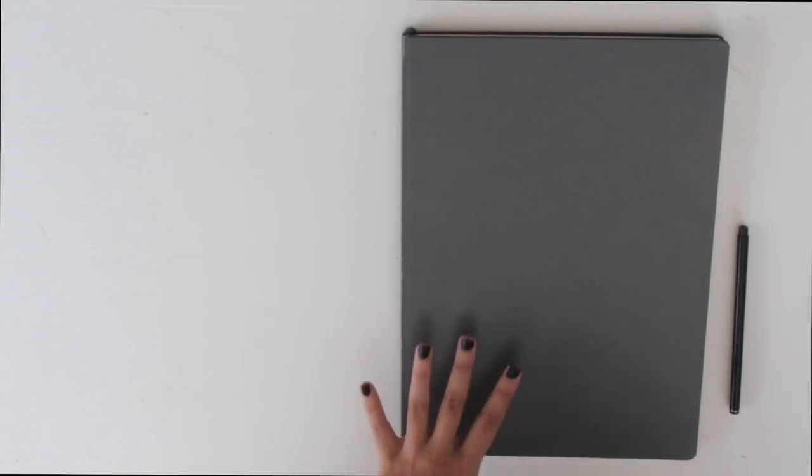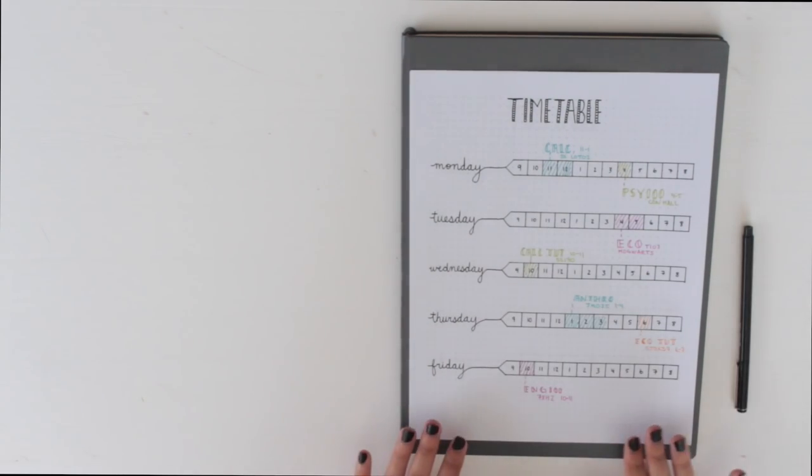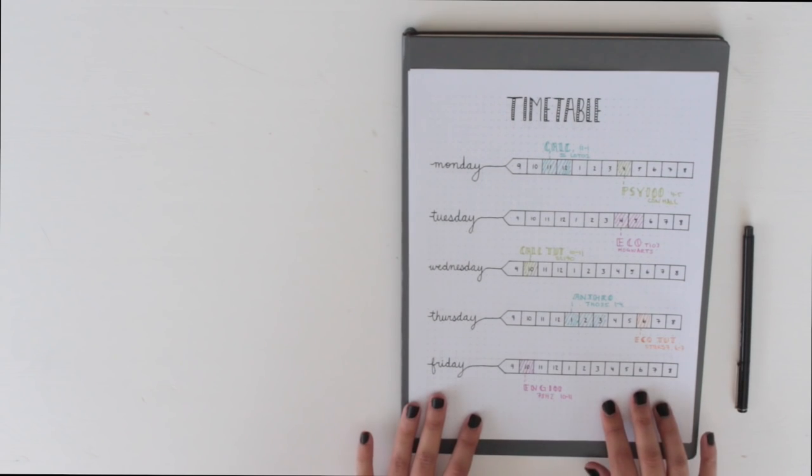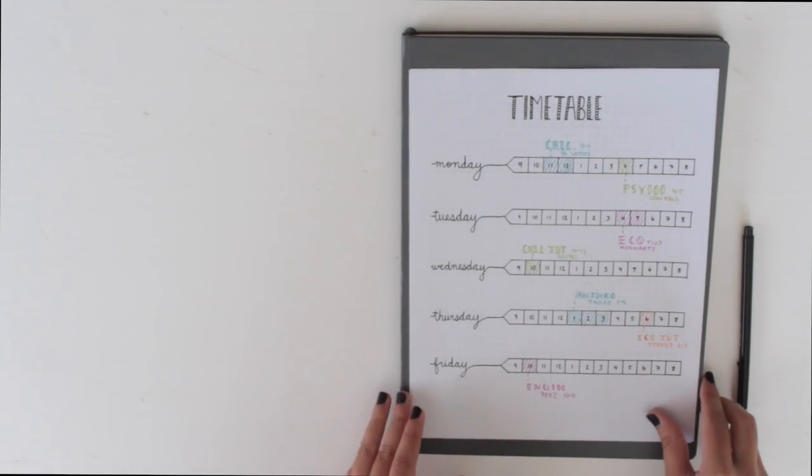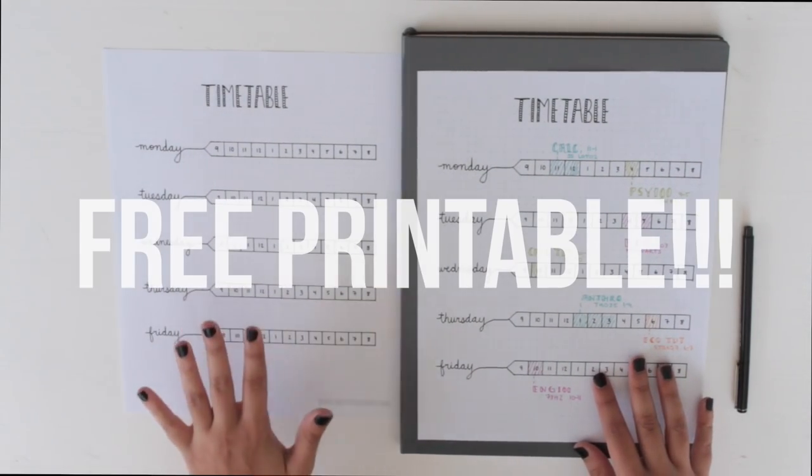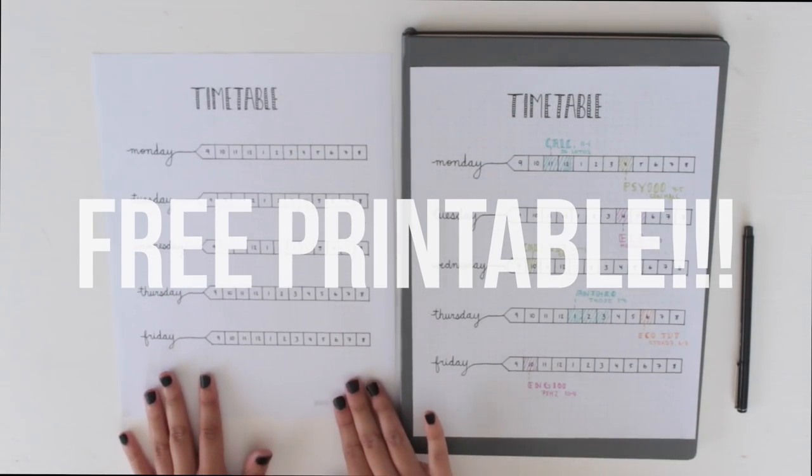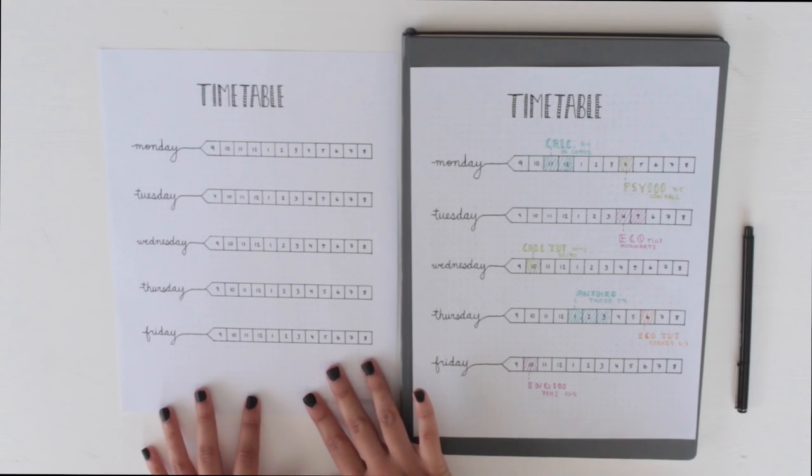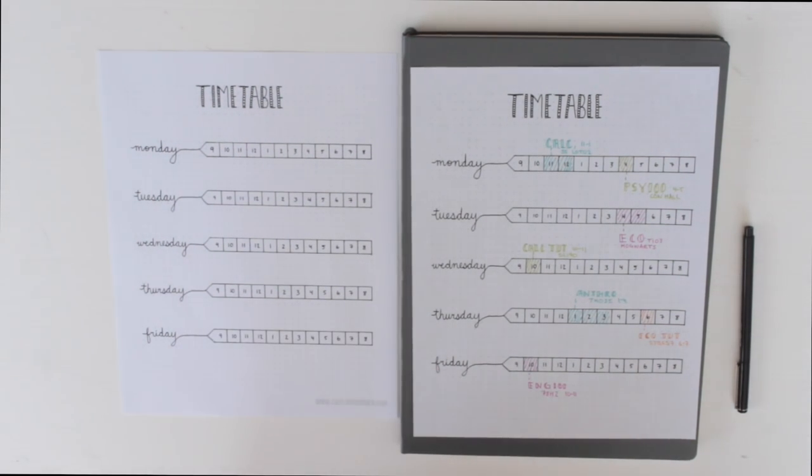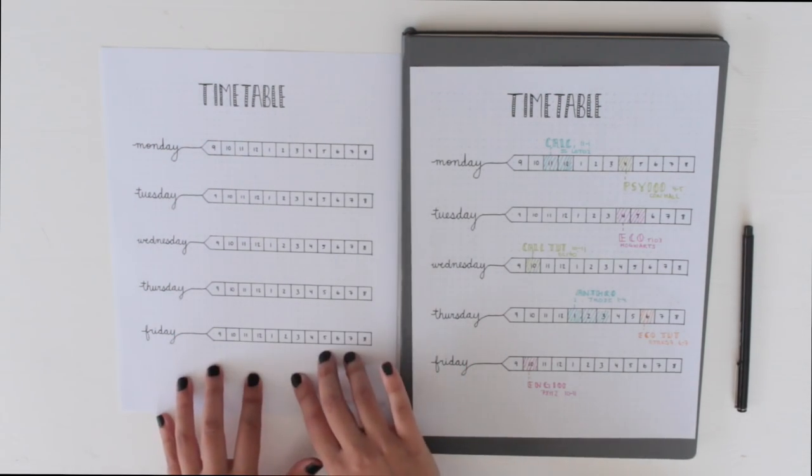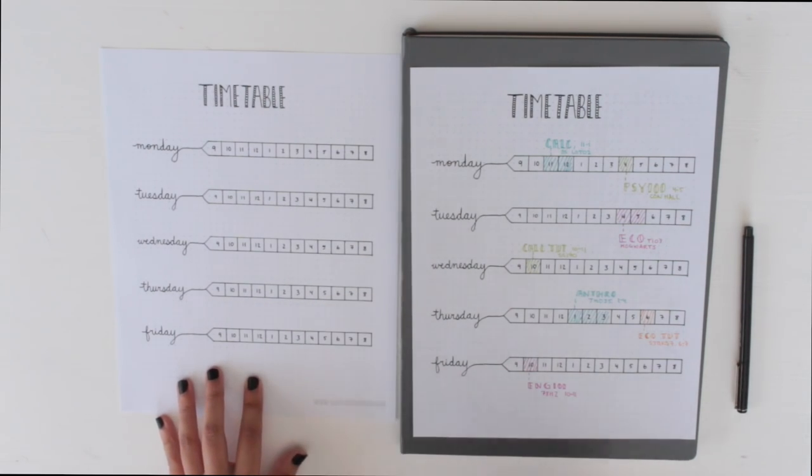But first, before we get into that, I have a little treat for you. You may remember my first student bullet journal video had a timetable page that I couldn't really show you because I had my actual schedule on there. So by request, I created a mock template so you can have a better idea of how this timetable would work. Not only that, I've also made available a free printable on my blog of this timetable. It's blank so you can fill it in with your classes. You can either use this as your timetable or use it as inspiration for creating your own version in your bullet journal.